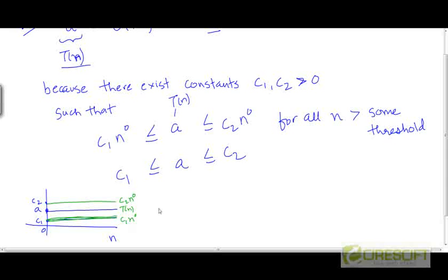For all n, this applies for all n greater than or equal to 0. So the threshold is 0 itself here. N naught is 0 itself. For any positive value of n,